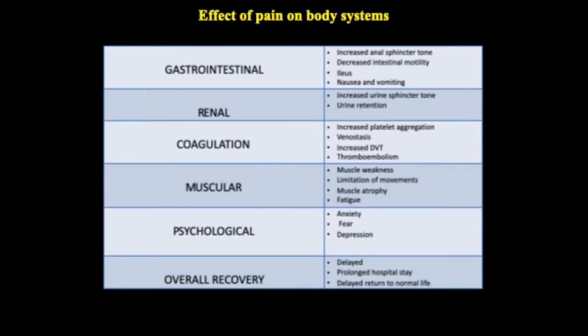Pain has different effects on the body systems. On the GI tract, pain increases the anal sphincter tone and decreases intestinal motility. Therefore, it may cause ileus, nausea, and vomiting. On the renal tract, pain can increase the urinary sphincter tone and cause urinary retention.